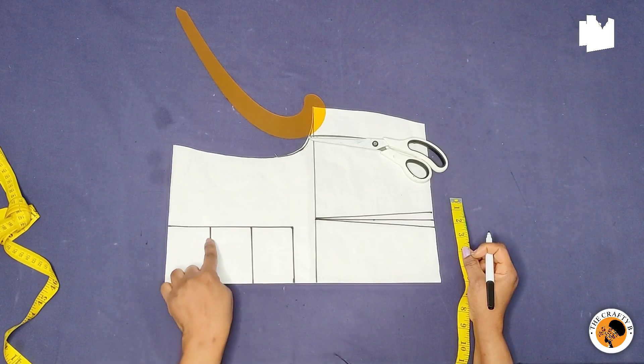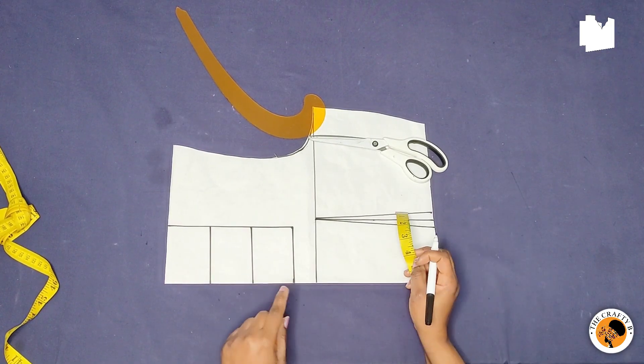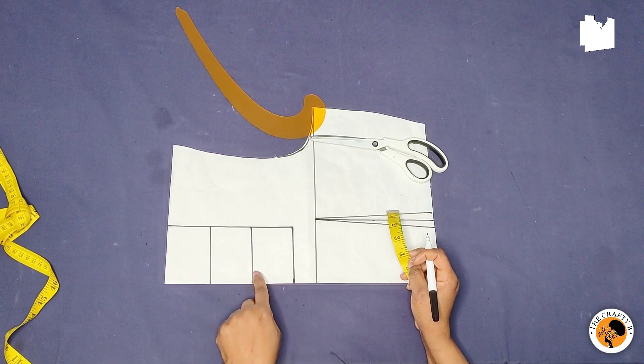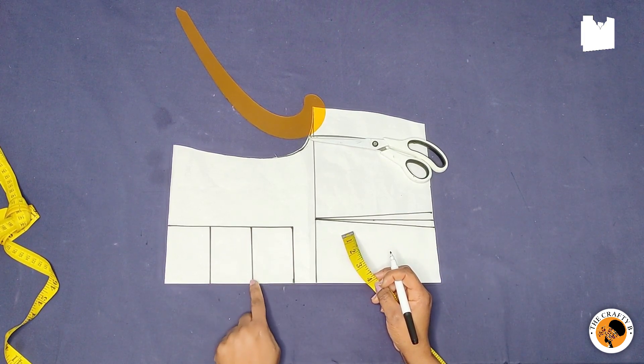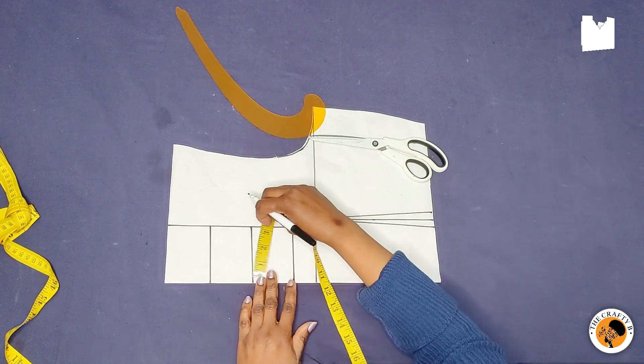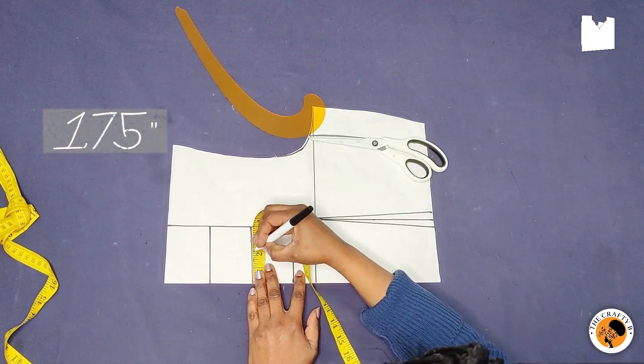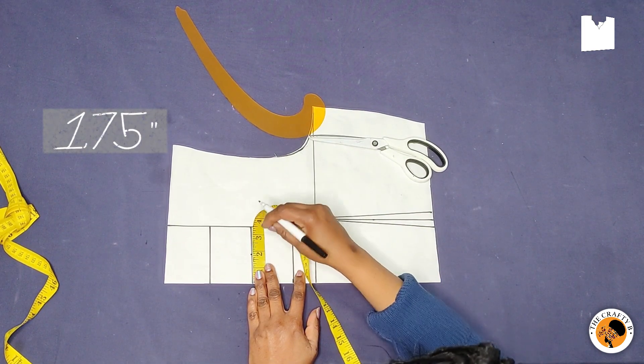So after marking these two lines, the next thing to do is to go to this second line and find the midpoint of this second line and mark it. 1.75 is the center, or you just fold your tape like so and then you find the center.